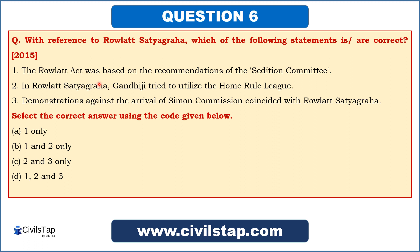We studied that all the Home Rule League leaders supported the Rowlett Satyagraha, so statement two is correct. And the Rowlett Act was suggested and recommended by the Sedition Committee, so statement one is also correct. Therefore the answer is 1 and 2 are correct — option B.